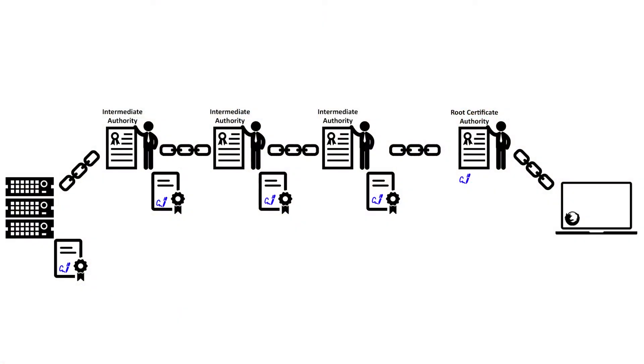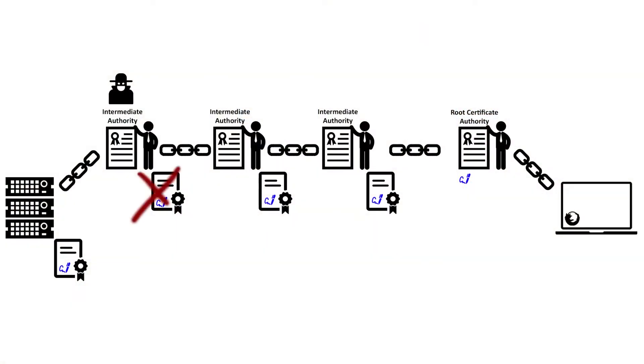However, the main certificate granted from the root authority can have a limitation on how long the chain can go. This process of creating the chain of certificates dilutes the value of attacking one fully operational authority. Any intermediate that's high up in the chain, or even the root, can easily revoke the certificate of a compromised intermediate authority. This in turn will cause all the server certificates granted by that compromised intermediate to be considered invalid.